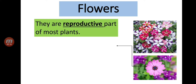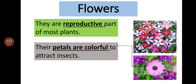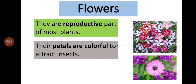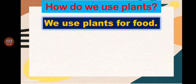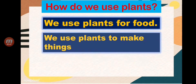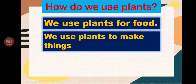Now let's talk about the flower. What is a flower? They are the reproductive part of most plants, and their petals are colorful to attract insects. The colored part of the flower is called petals. We also use plants for food and to make things.